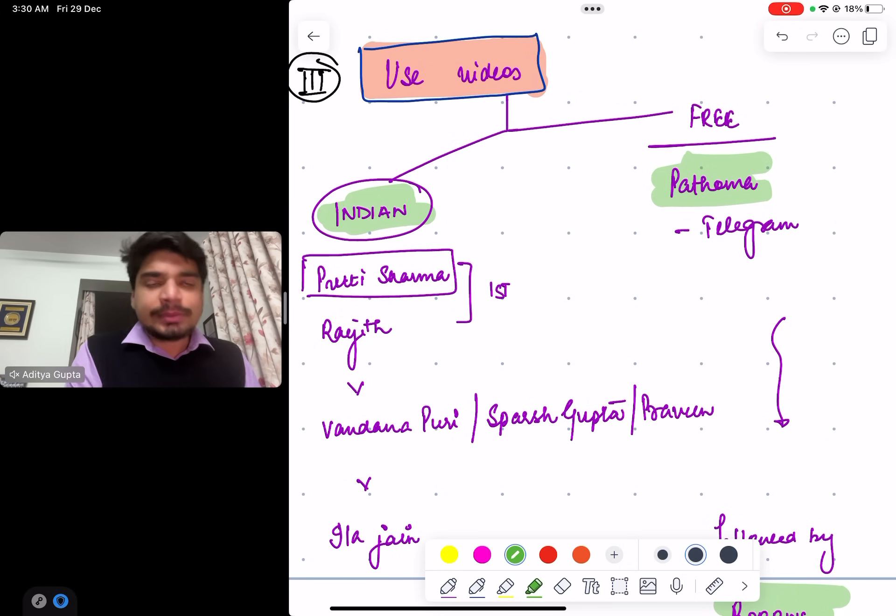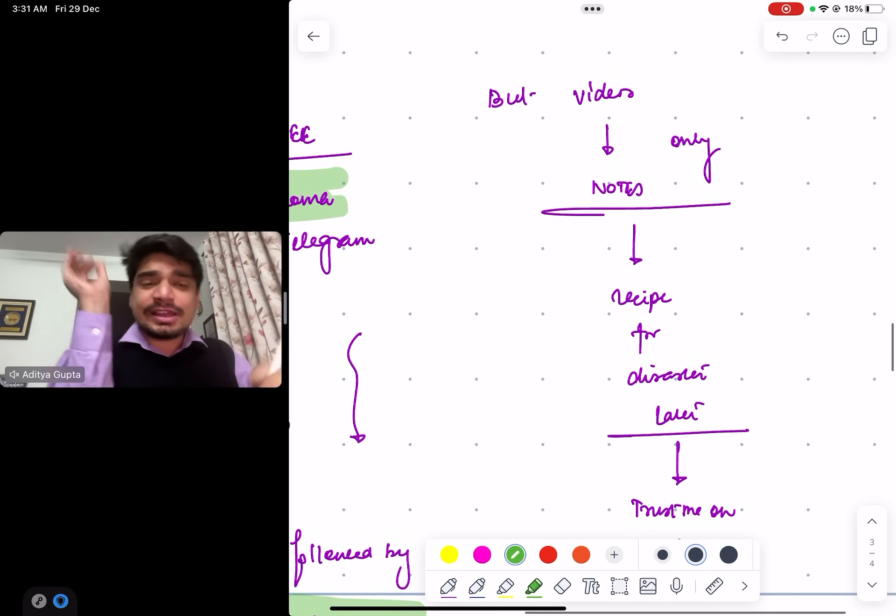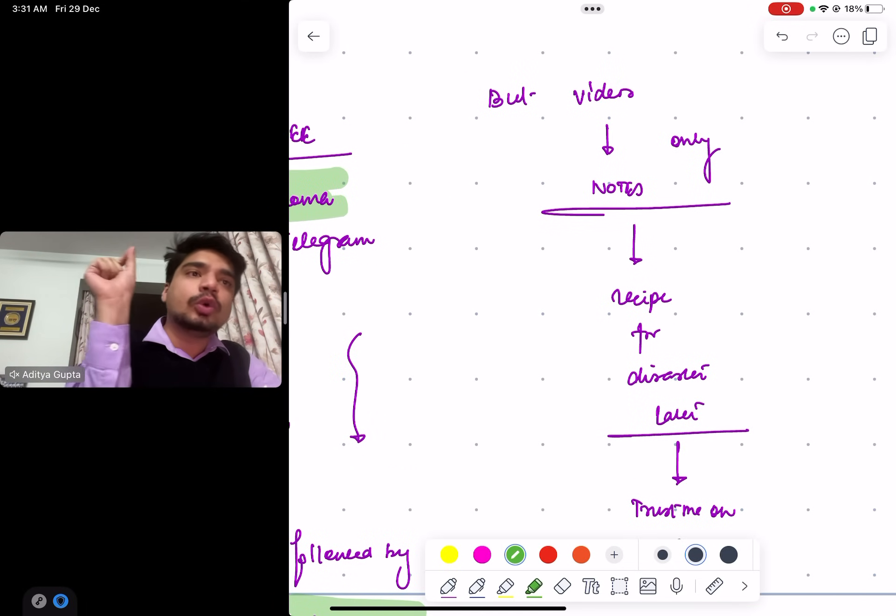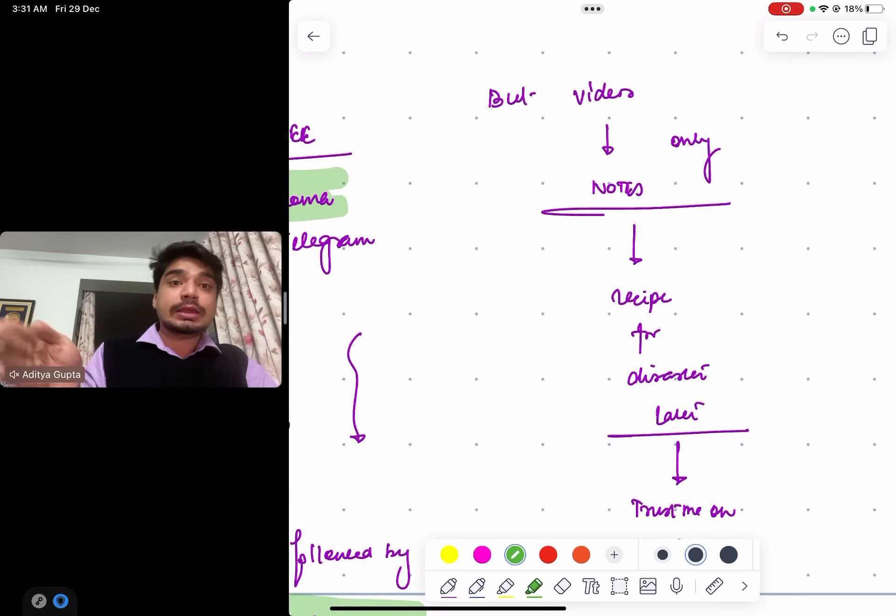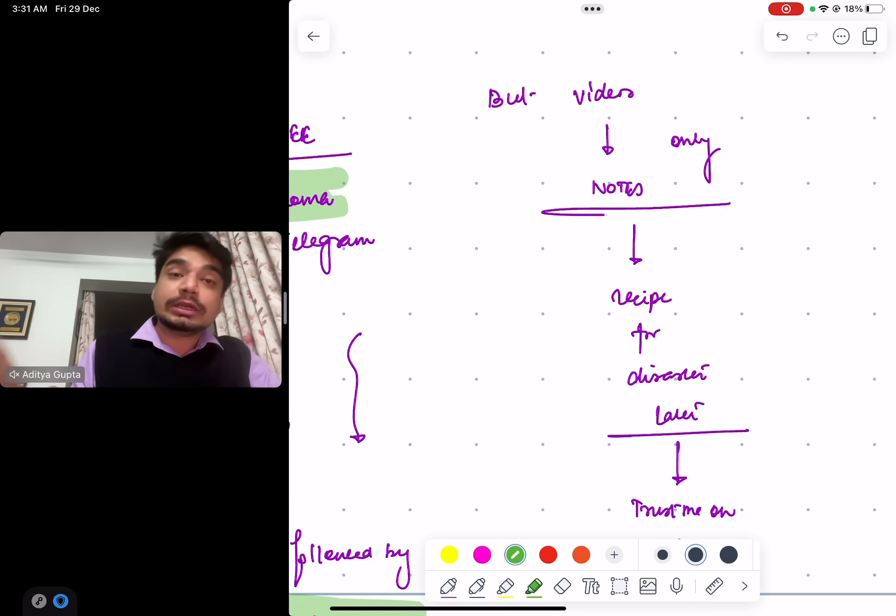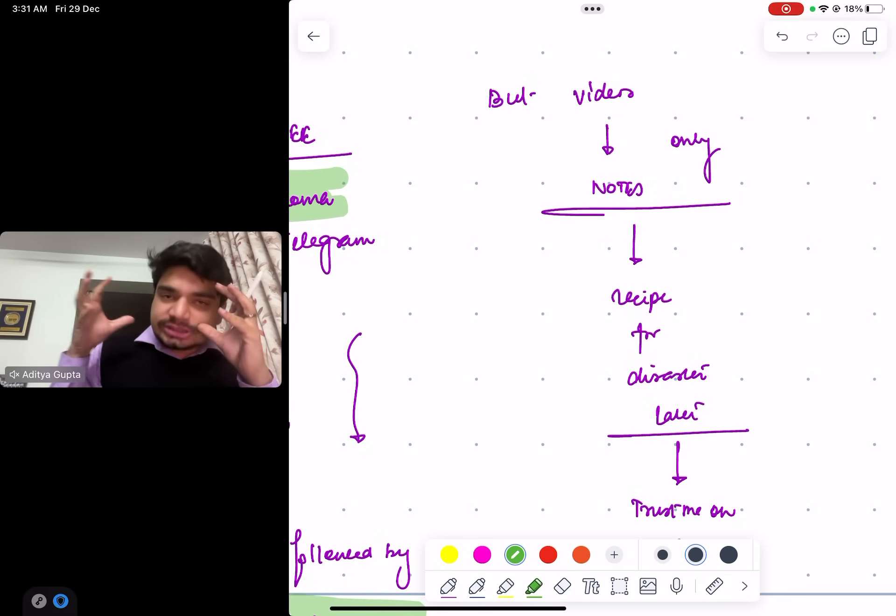If you want to ask my recommendation for video resources, you can use free Pathoma videos, I'll give the link in the description. If you want to buy a platform, from pathology point of view - not overall, by the way - from pathology point of view, my opinion is Preethi Sharma and Dr. Ranjitha are the best, followed by Vamshidhar Puri, Sparshi Gupta, Praveen sir in one category, followed by Alam. But my main recommendation to you is please don't get in the habit that I am done. You will repent later because there are things which are given in textbooks that make your understanding much better.